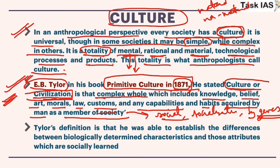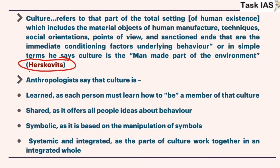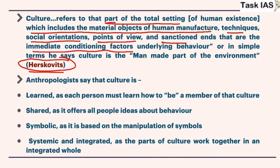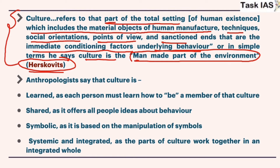Tylor's definition was able to establish the differences between biologically determined characteristics and those attributes which are socially learned. According to Harris, culture is that part of the total setting which includes material objects of human manufacture, techniques, social orientations, points of view, and the immediate conditioning factors underlying behavior. In simple terms, he says culture is the man-made part of the environment.